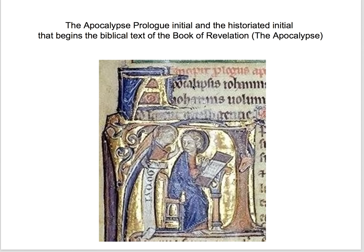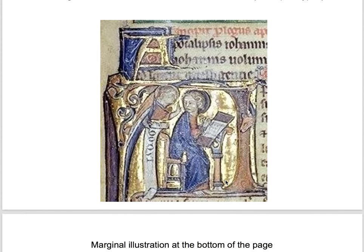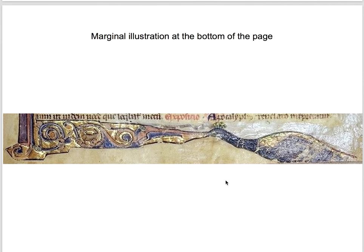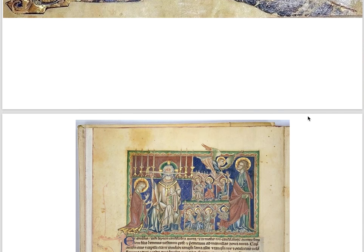This is also represented in the initial, where we have lots of gold leaf. We see the angel telling John what to write, and John is writing on a little lectern — in the form of author portraits we've seen before. And then we have a detail of the peacock there.